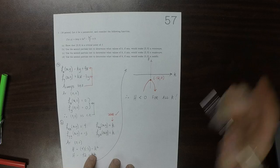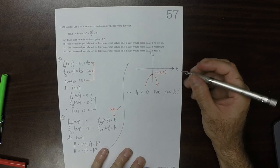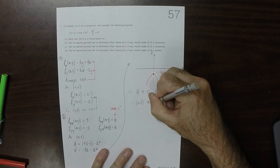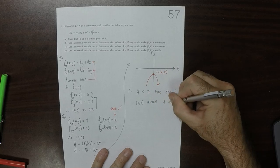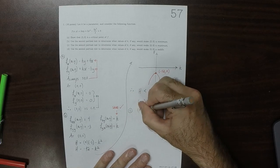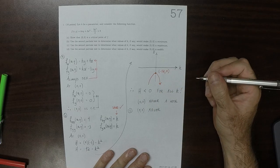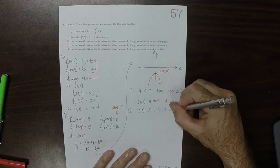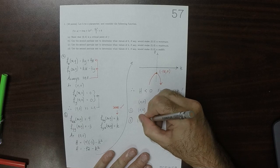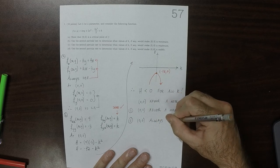So the answer to part b is that 0, 0 is never a min. The answer to part c is that 0, 0 is never a max. And the answer to part d is that 0, 0 is always a saddle.